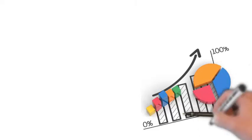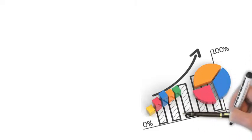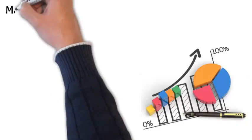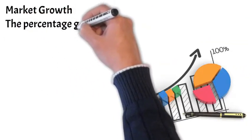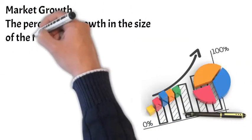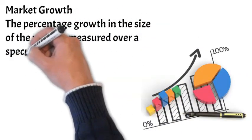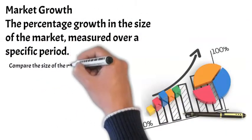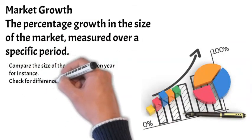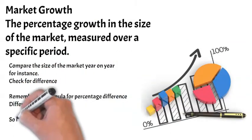Finally, we're going to look at market growth. And this is looking at what is happening to the size of your market over time. So you might compare the size of your market over a couple of years. So this is the percentage growth in the size of the market measured over a specific period. So you might compare the size of your market from last year to this year and calculate the percentage difference. Now, remember, the percentage difference formula is difference divided by original times 100. So you should get a percentage. And I've done one for you on the screen.